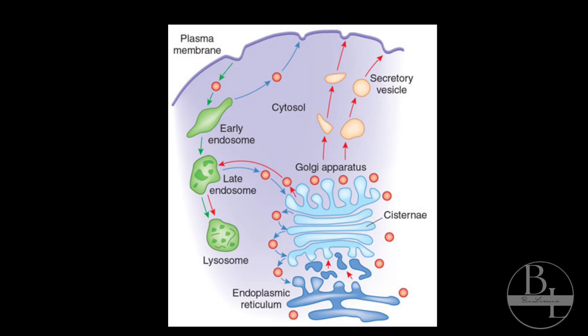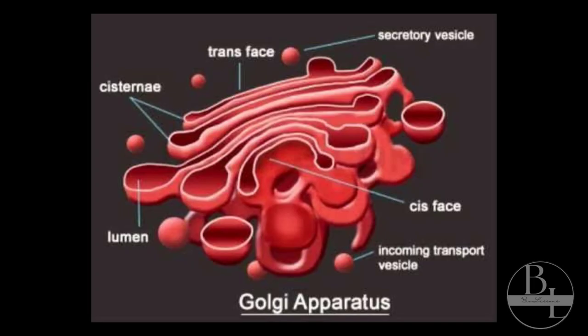This is the manufacturing, packaging, and transport unit of the cell. Golgi complex mainly consists of stacks of membranous sacks called cisternae. The diameter of cisternae varies from 0.5 to 1 micrometer. A cell may have few to several cisternae depending on its function.